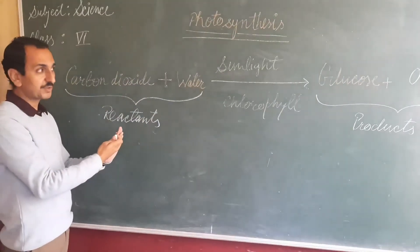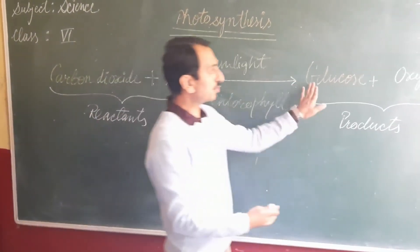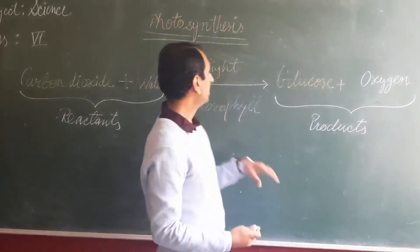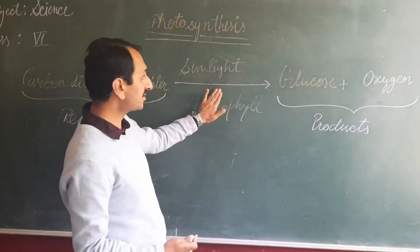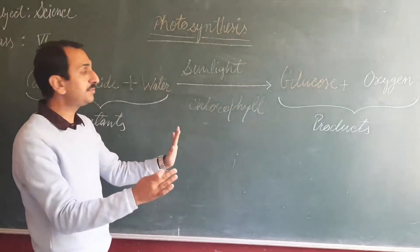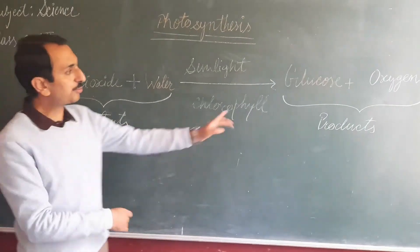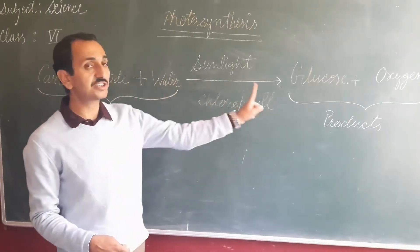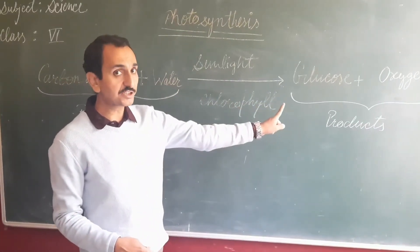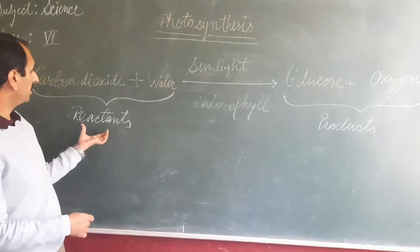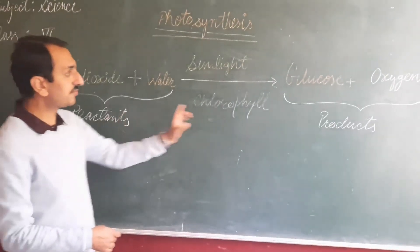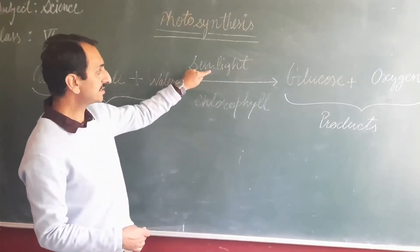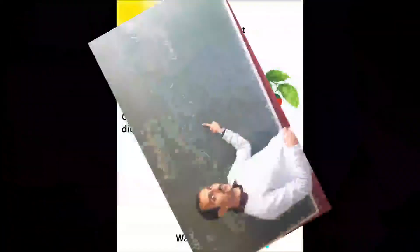Yee chizein react karengi. Aur banega kya? Glucose and oxygen — to yeh ban jayega product. Yeh arrow hai, jo equation mein reactants ko products se separate karta hai aur yeh bhi batata hai ki kis taraf reaction ho raha hai. Ab clear ho gaya. Reactants will be converted to the products. Conditions for the reaction are sunlight and chlorophyll.